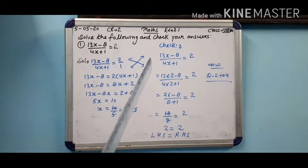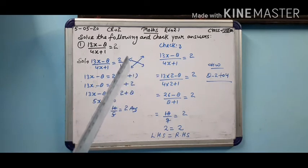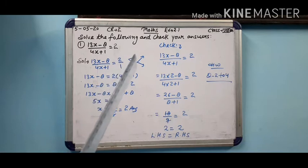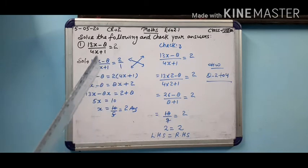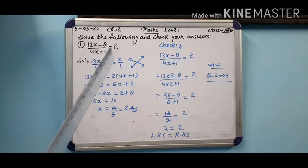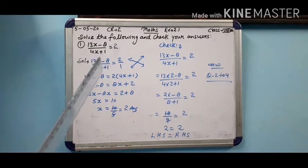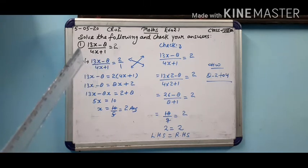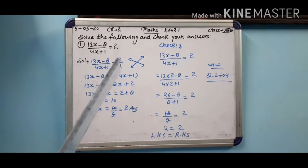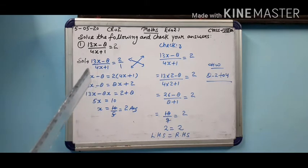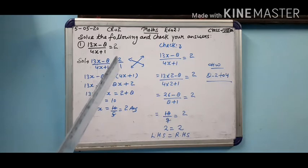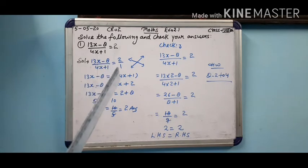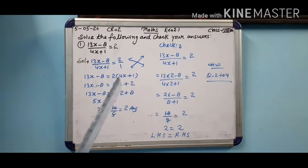Aur yeh maine arrow laga diya. Dekho cross arrow laga rakhe hain. Iska matlab yeh hai ki hum 1 ki multiply 13x minus 8 se karenge aur 2 ki multiply 4x plus 1 se karenge. Toh isके andar humne bracket laga di — 4x plus 1 ke andar.